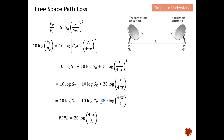Since we're talking about loss, this must be a minus term. To make it minus, I switch the two terms in the log expression. This gives my equation for free space path loss. As you can see, this is a general equation for free space path loss. The gain terms of the transmitter and receiver antennas do not play any part in contributing to the loss between transmitter and receiver.